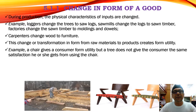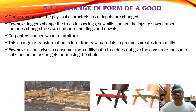During production, the physical characteristics of input are changed. That means the input — say for the production of a car, we bring in the steel plate and all the components — we bring it into the production line. For example in furniture production, the loggers change the tree to saw log. So the furniture factory first buys the loggers.